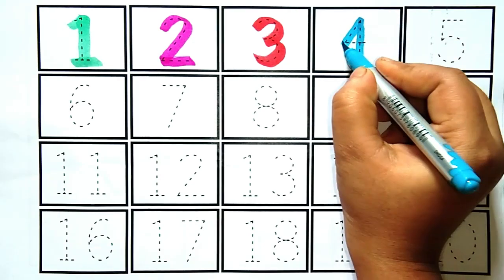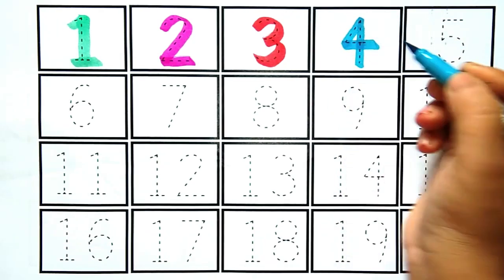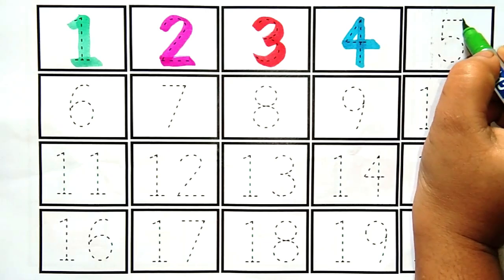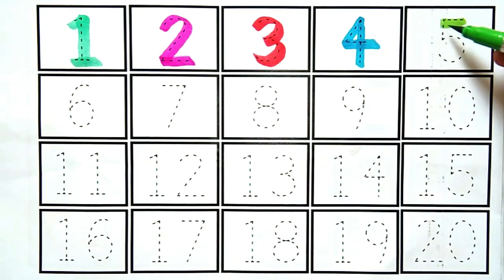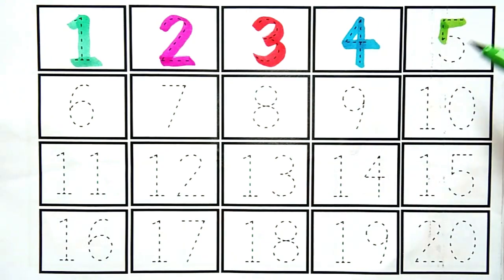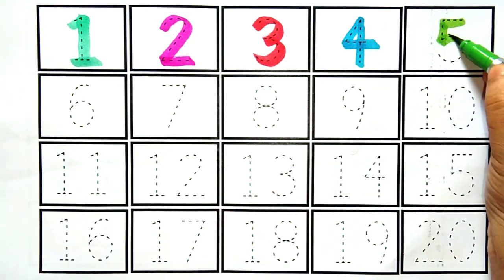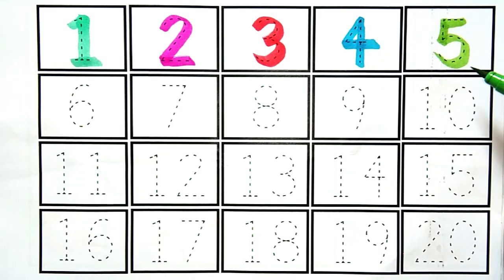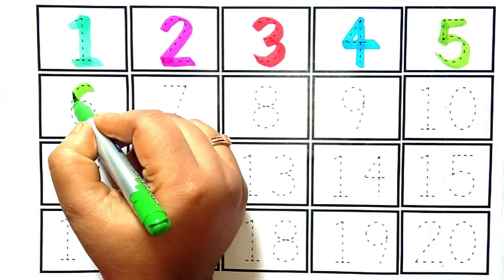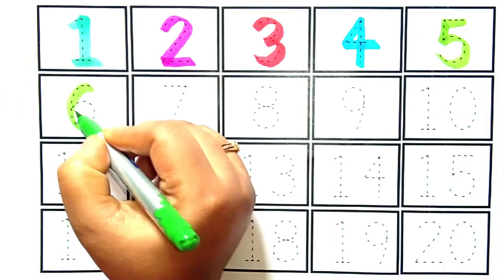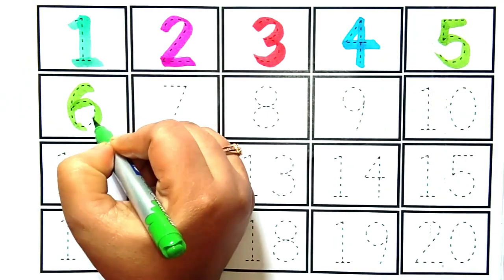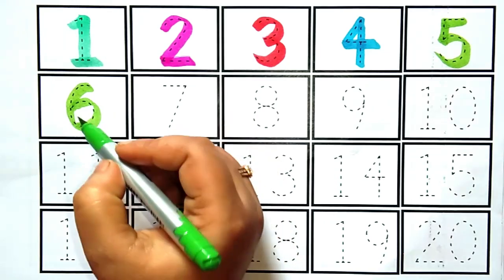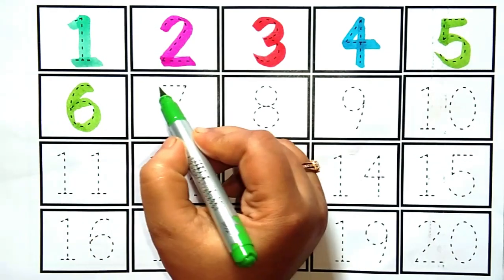Yeh hai number 4. Kia hai kids? Yeh hai number 4. Yeh hai number 5. Kia hai kids? Yeh hai number 5. Yeh hai number 6. Kia hai kids? Yeh hai number 6.